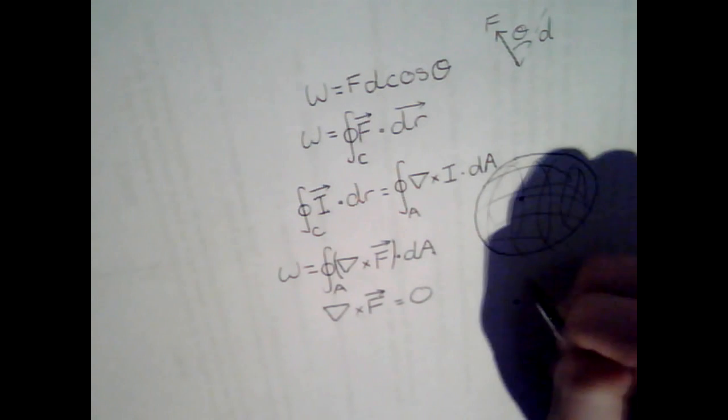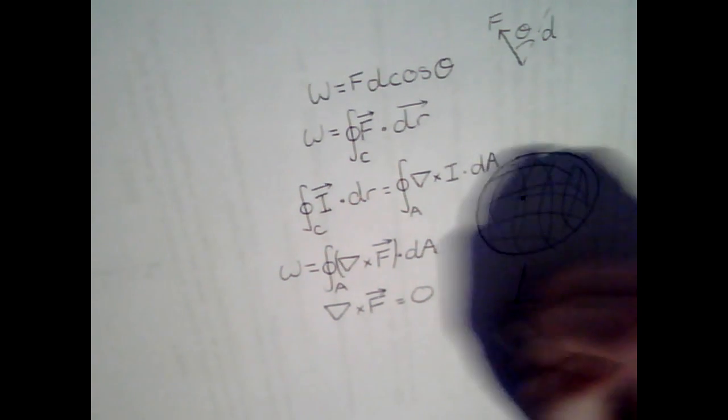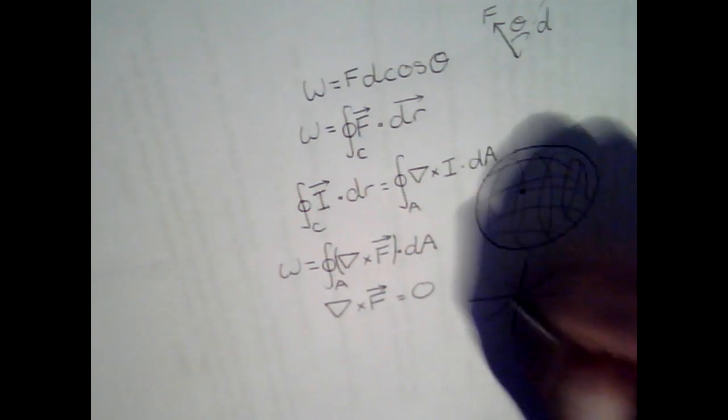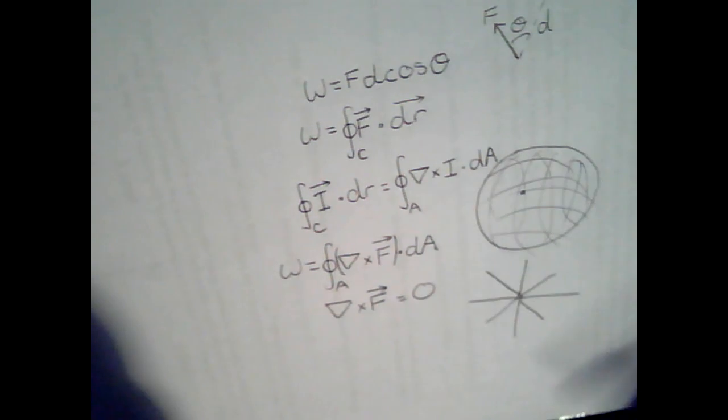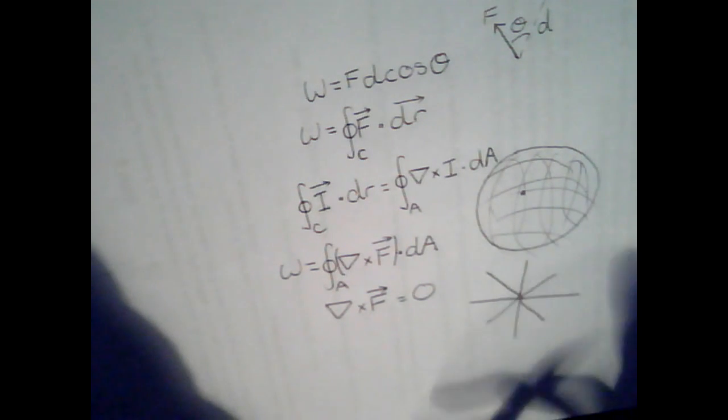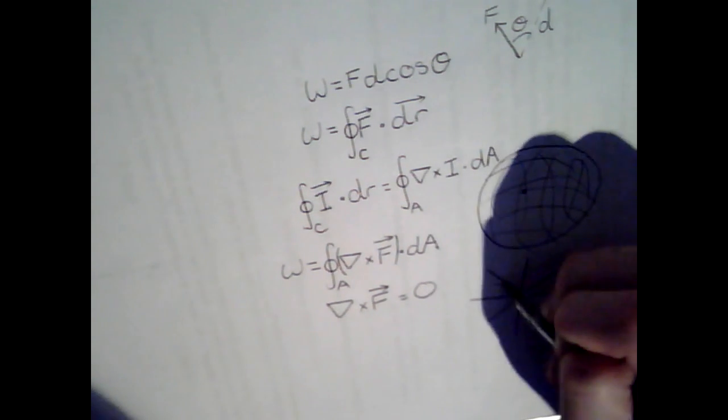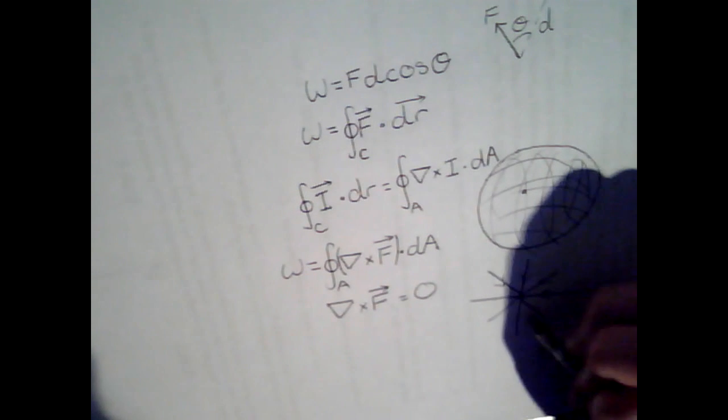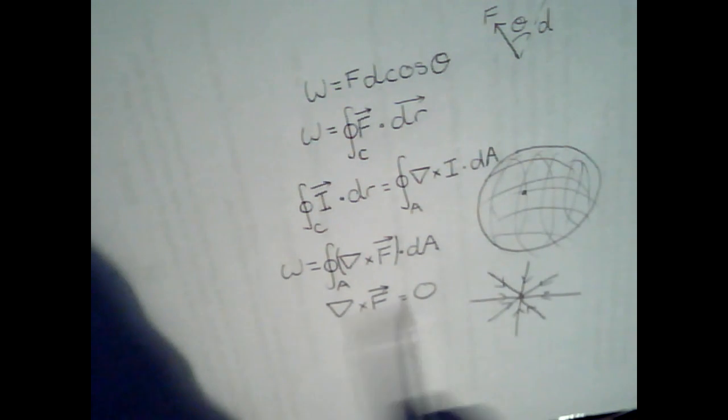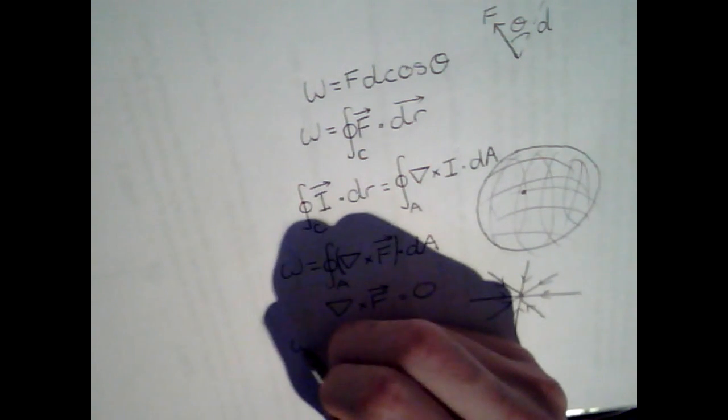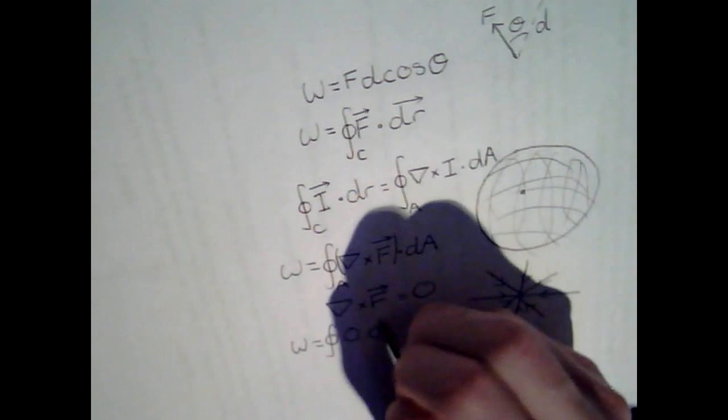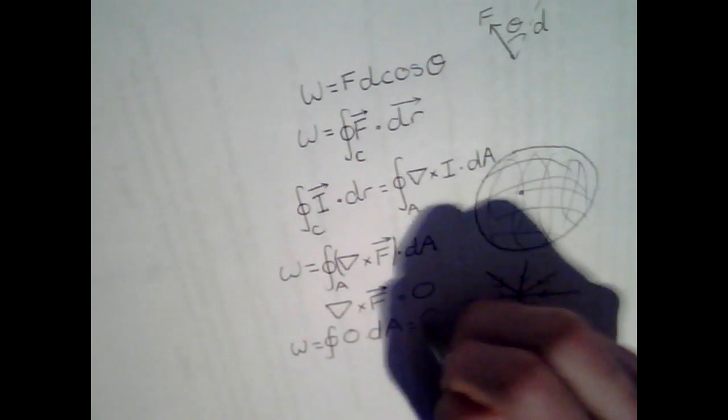It's pretty obvious when you look at this. The field lines of f are simply completely radial, and there's no turning, no anything. There's a more mathematical way to prove this, but it's pretty much self-explanatory. There's no curl in this field whatsoever. So, the curl of this equals zero, which means the work equals the integral of zero dot d a, which equals zero.